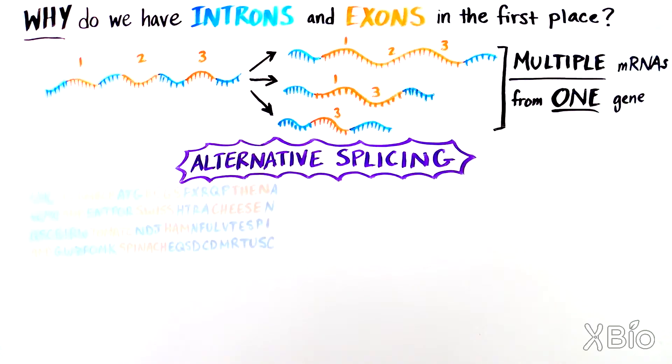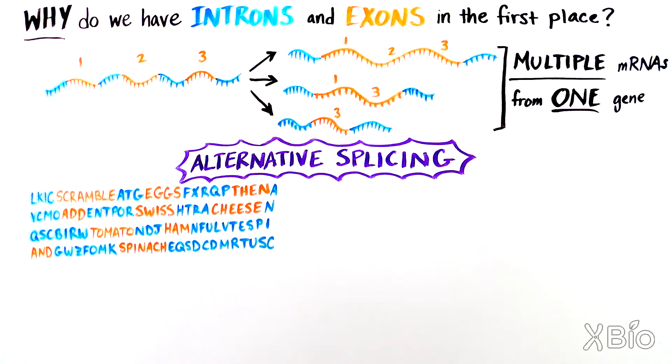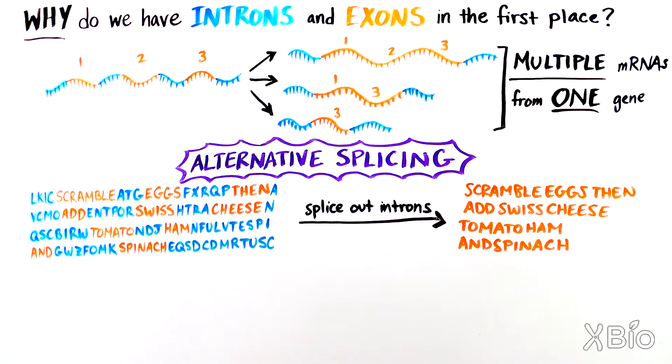Let's go back to the brunch dish your friend requested. If all the introns are spliced out, it reads, scramble eggs, then add Swiss cheese, tomato, ham, and spinach.